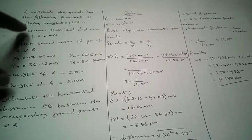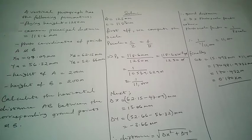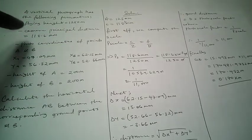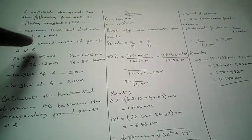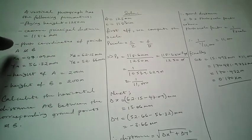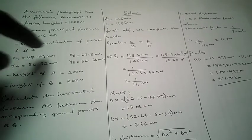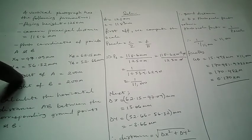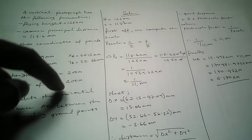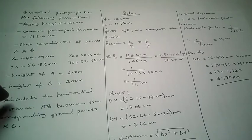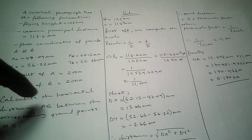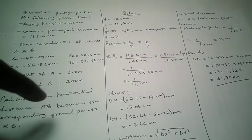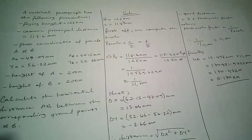On that particular question paper, we are going to look at this question: a vertical photograph has the following parameters — a flying height of 1250 meters, a camera principal distance of 118.6 millimeters. They give us the photo coordinates of two points, the x and y coordinates of point A and point B, along with the heights of points A and B, which are equal.